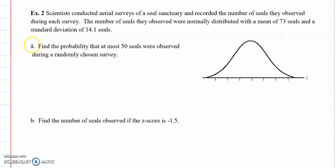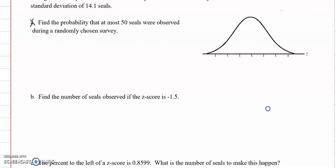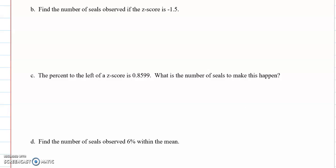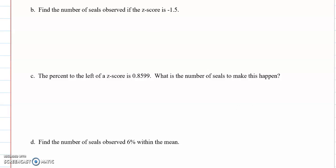I'm going to skip part a because it's just like what we did in example one. Part b find the number of seals observed if the z score is negative 1.5. So this time we know the z score and we need to figure out the data value. So we just have to reverse order of operations. So we multiply by 14.1 and then we're going to add 73. So that is approximately 52 seals.